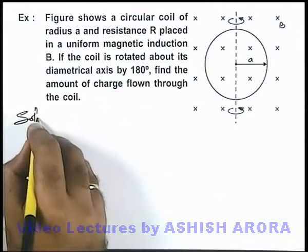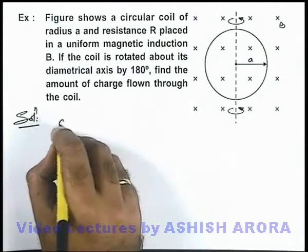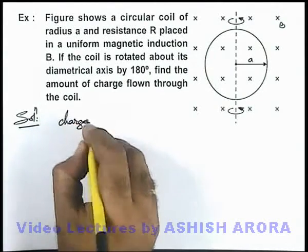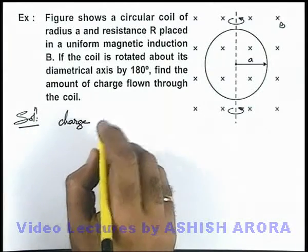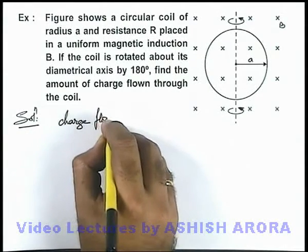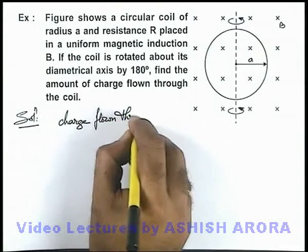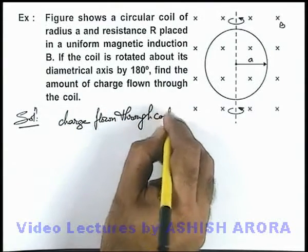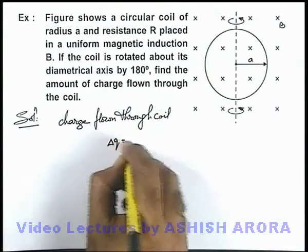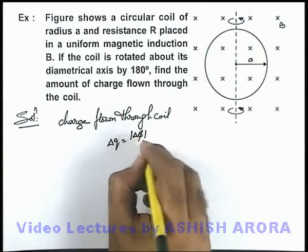In this situation, we can directly make use of the result that in any situation of change in orientation of a coil in a magnetic field, charge flown through the coil can be given as Δq = |Δφ|/R.